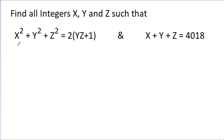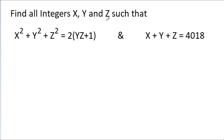In this video, we are given that x² + y² + z² = 2yz + 1 and x + y + z = 4018, and we have to find all integers x, y, and z.